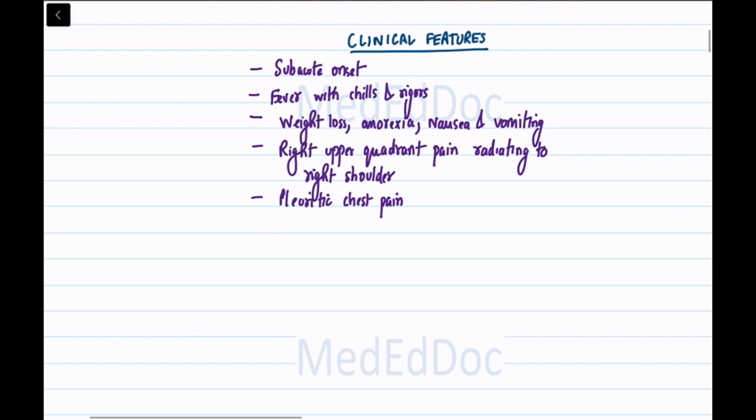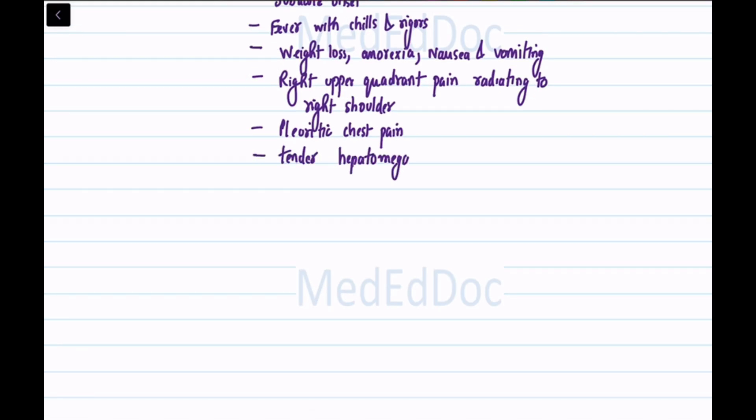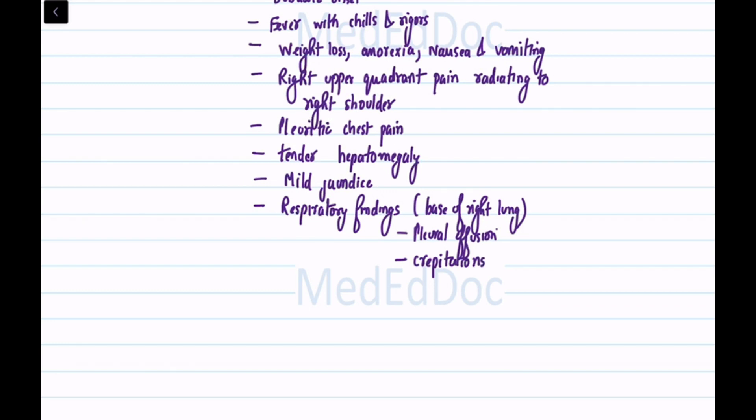Pleuritic chest pain. Tender hepatomegaly, enlarged liver. Mild jaundice. Respiratory findings at the base of the right lung, such as pleural effusion and crepitations.